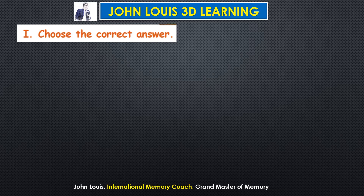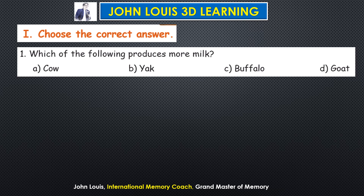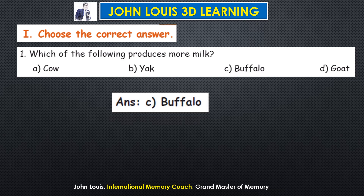Choose the correct answer. First question: which of the following produces more milk? Most animals yield milk. The options are cow, yak, buffalo, and goat. The correct answer is C — buffalo. Buffalo produces more milk.